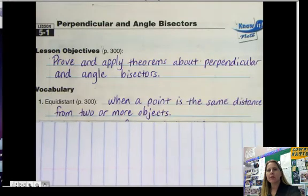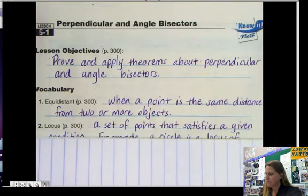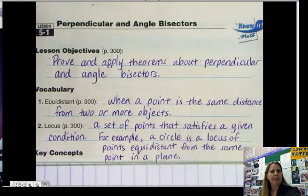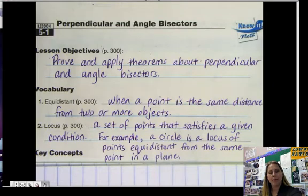Equidistant means when a point is the same distance from two or more objects. And a locus is a set of points that satisfies a given condition. For example, a circle is a locus of points equidistant from the same point on a plane.